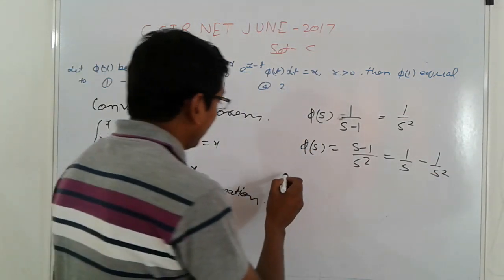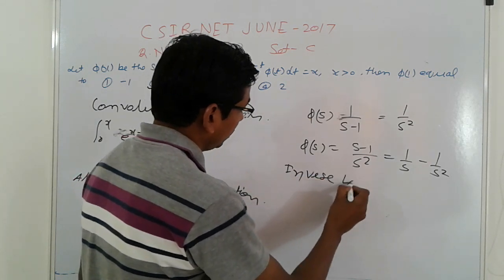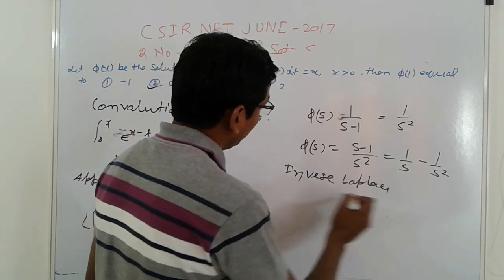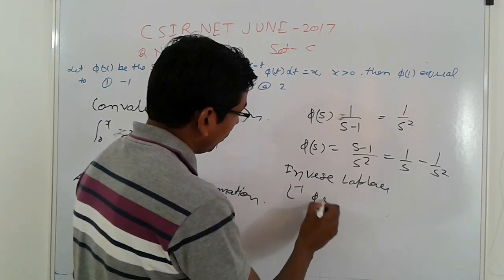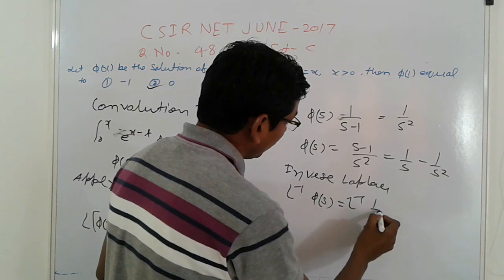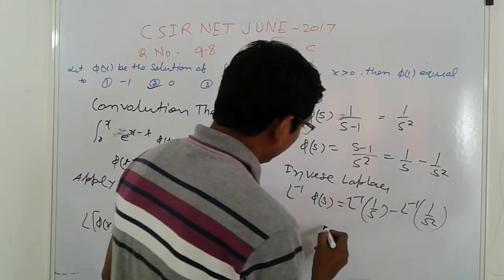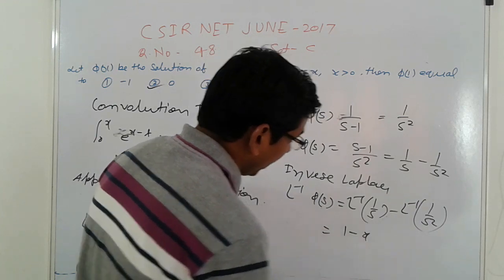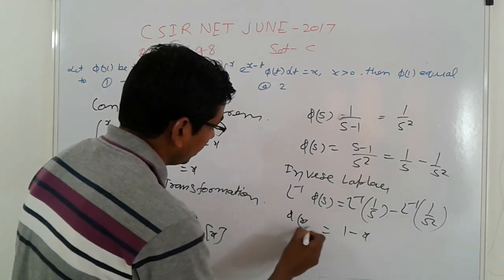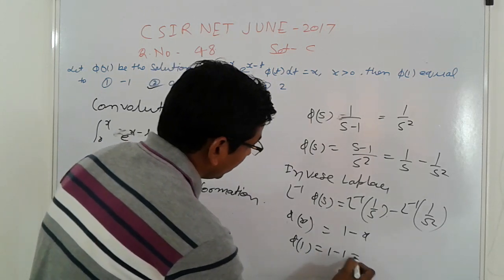L⁻¹{φ(x)} = L⁻¹{1/s} - L⁻¹{1/s²}. Using the property, we get φ(x) = 1 - x. Again, φ(1) = 1 - 1 = 0.